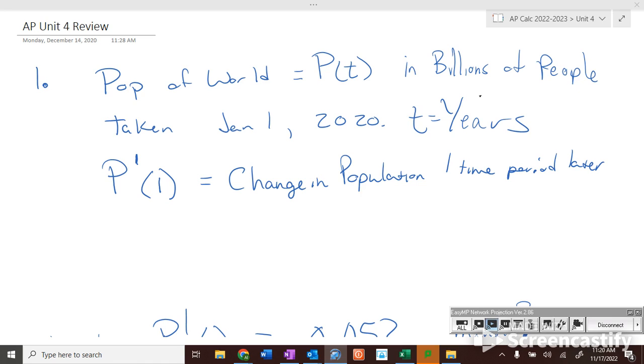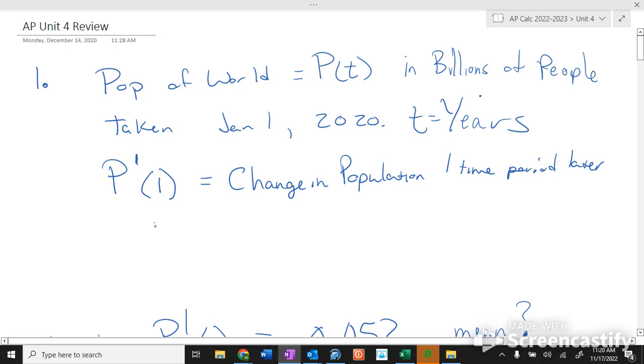The change of population in the one time period, right? So if that means a change of population on January 1st, what year do you think it would be at P sub 1? 2021, January 1st, 2021. What do we know is happening?